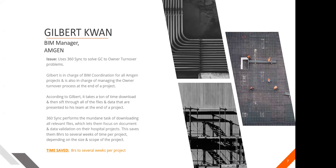Here's a testimonial from Gilbert Kwan, BIM manager at Amgen. He primarily uses 360 Sync to solve the GC-to-owner turnover problem. The biggest issue before 360 Sync was that it took a ton of time to download and sift through all the files, then validate the correct version. What 360 Sync did for him was take the time-consuming and mundane task of downloading all those files so he could focus instead on confirming and validating them. He said it saved him about eight hours to several weeks of time per project, depending on project size.